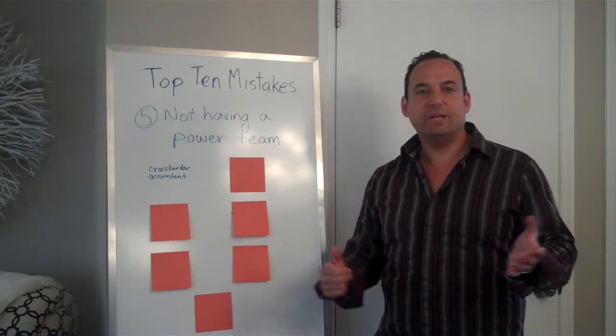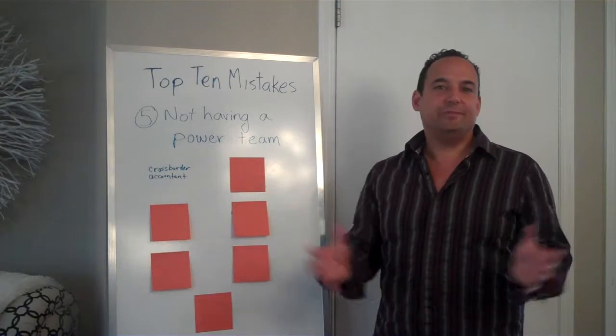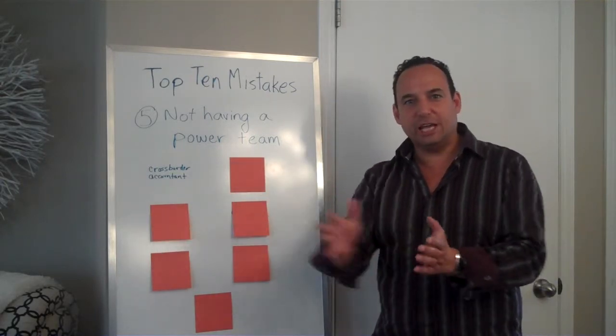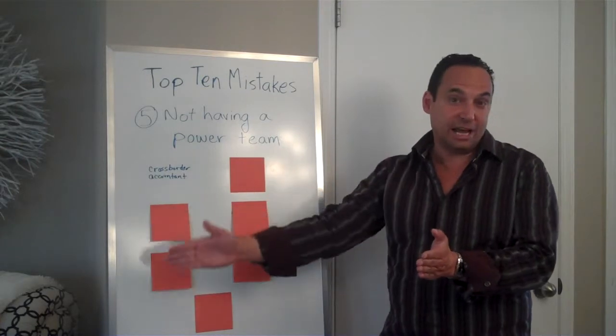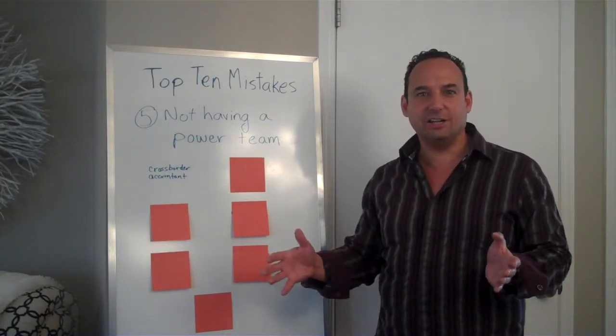So we're going to start off with a cross-border accountant because before you even start investing in the US you need to know what kind of structure you're going to be putting these properties into, what type of entity. Are you going to put the properties in your personal name? Is it going to be a Canadian corporation, an American corporation? You need to figure this out beforehand.